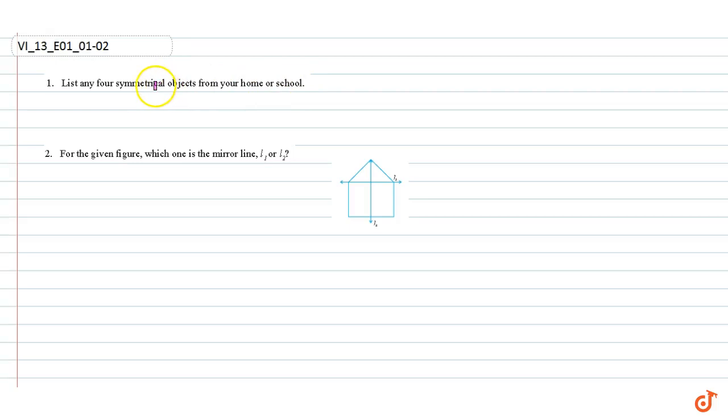In this video we are going to answer question number one and two. Question one: list any four symmetrical objects from your home or school. Sheet of paper is a symmetrical object, football is a symmetrical object.